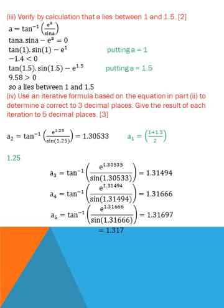In part 3, verify by calculation that a lies between 1 and 1.5. We write the equation as tan a times sin a minus e to the power a equals a function. Putting a equals 1, we get minus 1.4 which is less than 0. Putting a equals 1.5, we get 9.5 which is greater than 0. Since the function changes sign, the root lies between 1 and 1.5.